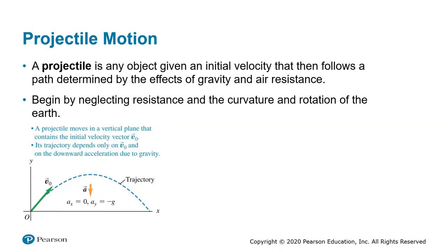We begin by neglecting air resistance and the curvature and rotation of the Earth. We are setting an idealized model. When we talk about projectiles as particles, we assume the acceleration due to gravity will be a constant 9.8 meters per second squared, ignoring effects like wind and pressure. But remember that in real life calculations, you must never ignore air resistance — for example, if you're a skydiver or calculating the flight of long range missiles, you need to consider air resistance and the curvature of the earth.